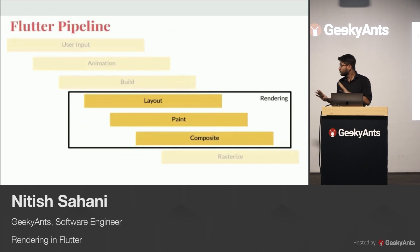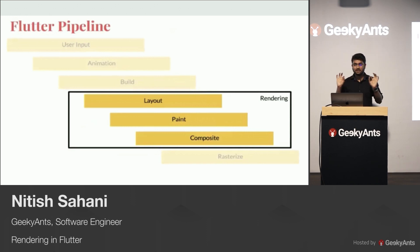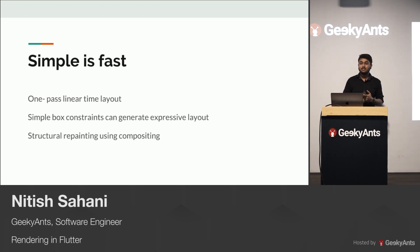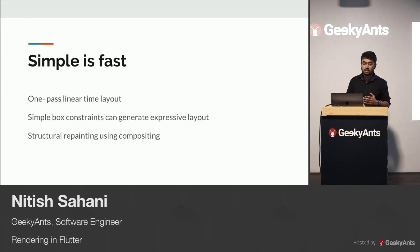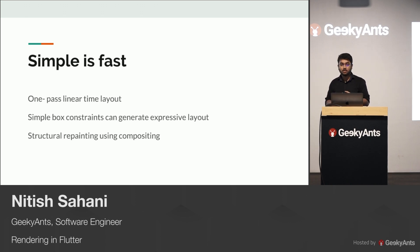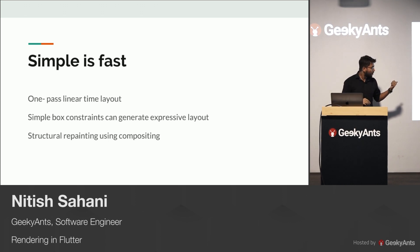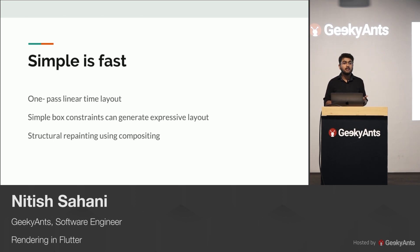This all looks quite complex. But what if I tell you the principle behind Flutter is just simplicity? The basic design principle behind the rendering part of the pipeline is simple, hence making it fast. If we use simple, straightforward algorithms with very well-understood properties, then we can make them go fast by taking advantage of those properties and optimizing them. The three main rules are: one-pass linear time layout, simple box constraints which generate expressive layouts, and structural repainting using compositing.